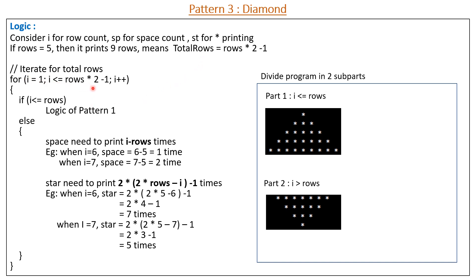I have written the outer for loop for I equal to 1 to I less than or equal to rows multiplied by 2 minus 1. In this loop we need to apply two different logics, so I have divided the program into two parts: Part 1 where I is less than or equal to rows, and Part 2 where I is greater than rows. I added an if-else statement to check this. In Part 1 we apply the same logic as pattern 1 — the same conditions for printing spaces and stars.